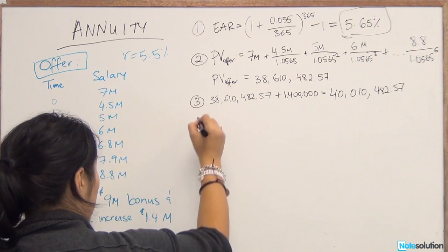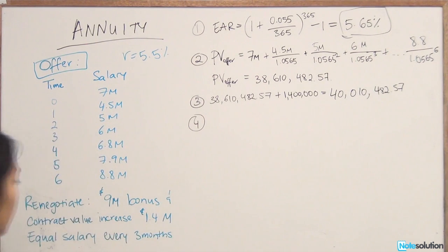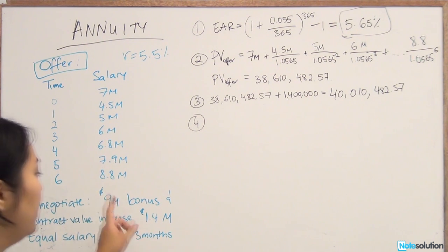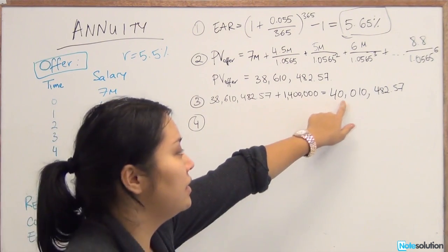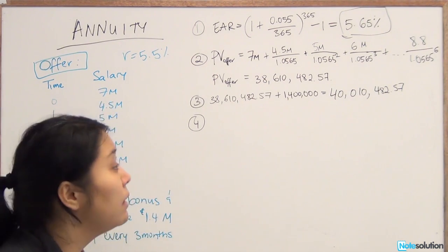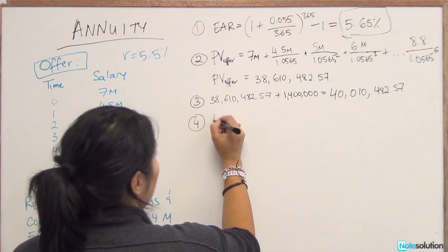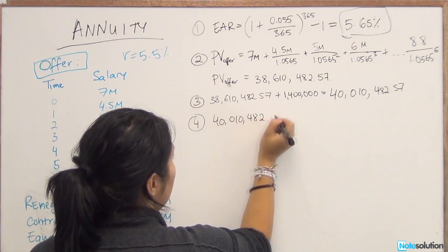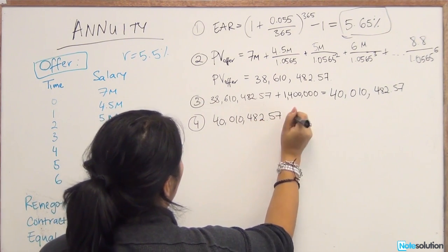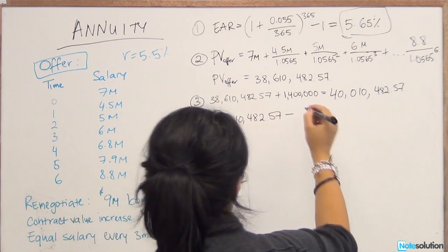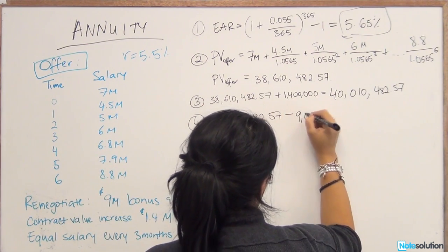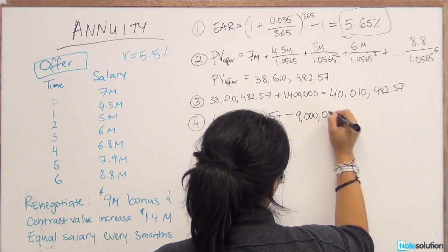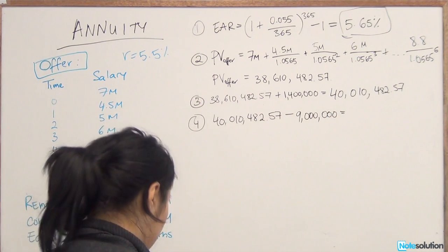He also wants a signing bonus of $9 million, but he wants it today. So what does that mean for a present value calculation? Well, we can take out the $9 million here because he wants to bring it out and it's not going to be part of his annuity payment. So we're going to take the present value of how much he wants overall and we're going to subtract $9 million from it because he's getting that now, and it's not going to factor into his quarterly payment.